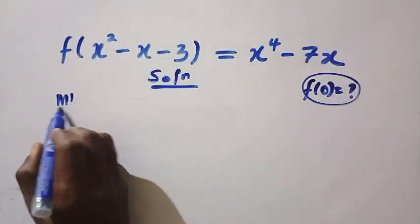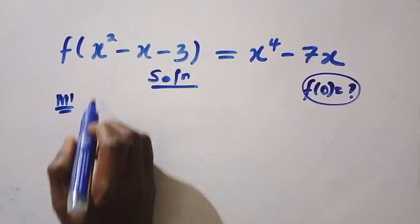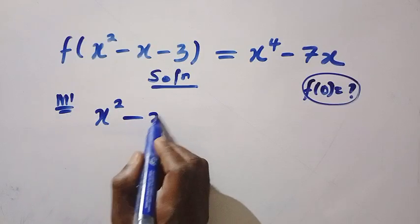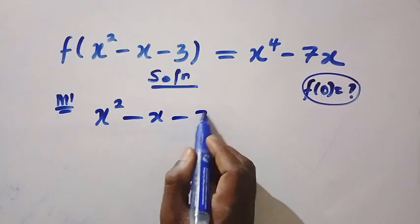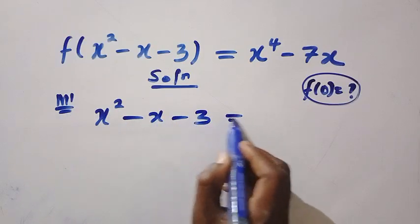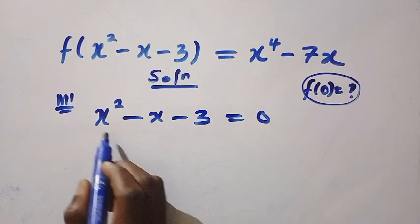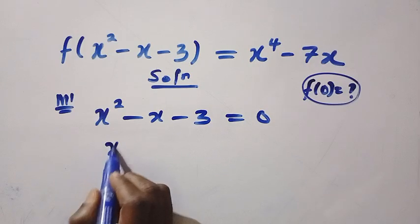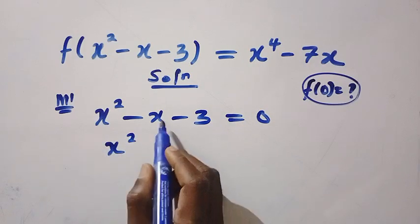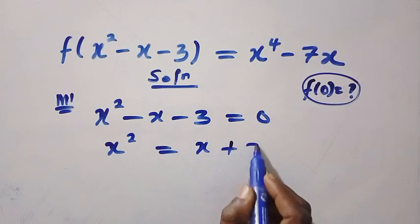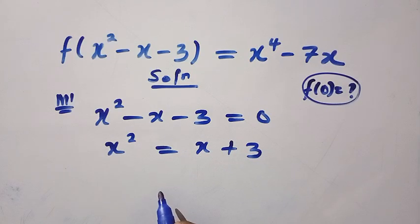In the first method, if I let x squared minus x minus 3 be equal to 0, then at this point we have x squared equal to x plus 3. This is what we are going to have.